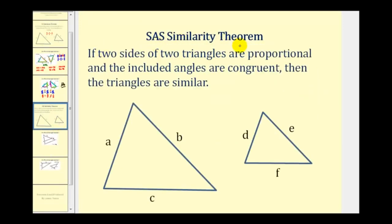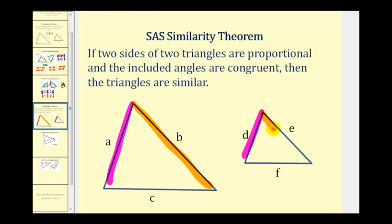Now let's talk about side-angle-side similarity. If two sides of two triangles are proportional and the included angles are congruent, then the triangles are similar. For example, if the ratio of a to d equals the ratio of b to e, and the included angle formed by those two sides is congruent, the triangles are similar. The congruent angles must be formed by the sides that are proportional.